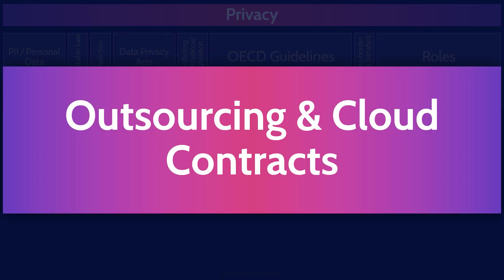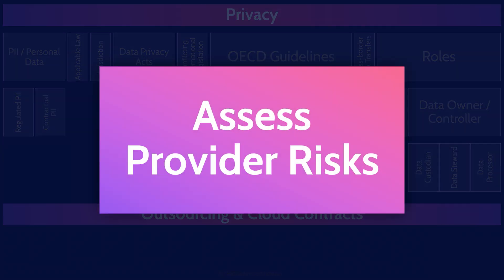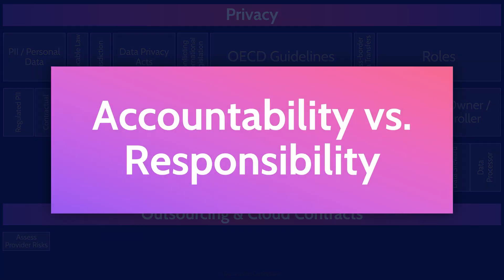Moving on to outsourcing and contracts: your organization is likely reliant on a bunch of different cloud service providers. This outsourcing helps your company focus on what it does best, but it also means relying on other parties to keep the gears turning. We use contracts to ensure that vendors live up to their promises. Before anyone signs a contract, it's important to assess the risks from each individual provider. Whenever you're outsourcing something, you are ceding a degree of control, and you need a thorough risk assessment to ensure the provider can meet your needs. Ultimately, the customer remains accountable for the security of their data — the customer cannot outsource accountability, but they can delegate responsibility.